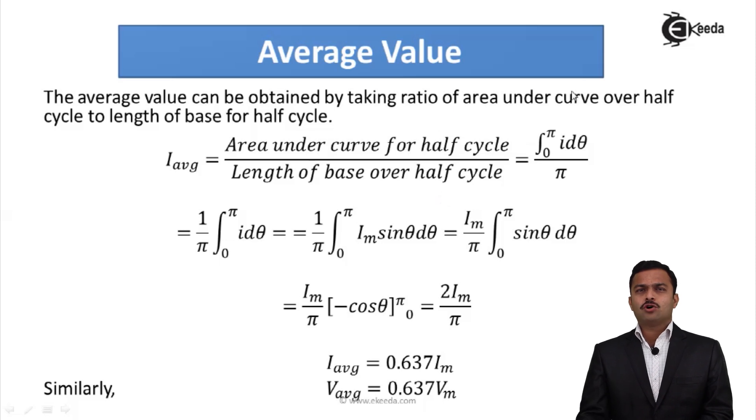The average value can be obtained by taking the ratio of area under the curve for half cycle to length of base over half cycle. So I_average equal to area under curve for half cycle, and we have seen that it is integral 0 to π of I dθ, because I dθ is that small element which we need to integrate to get complete area under the half cycle.